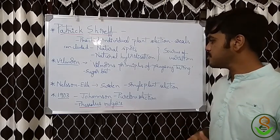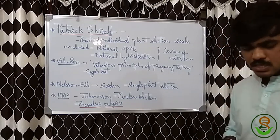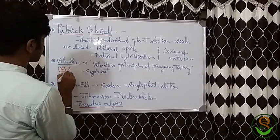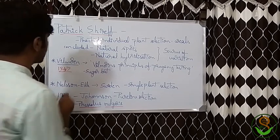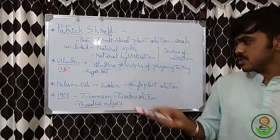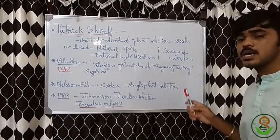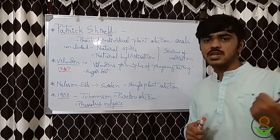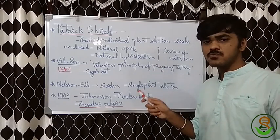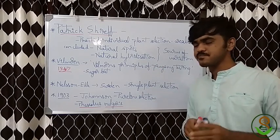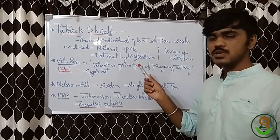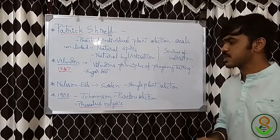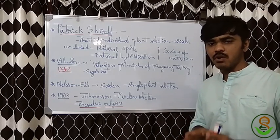The next important work is Vilmorin's Principles of Progeny Testing, given in around 1857. Don't confuse this with the Vilmorin company — this Vilmorin is a scientist, a descendant of those founders. He gave the principles of progeny testing, working on the plant sugar beet.